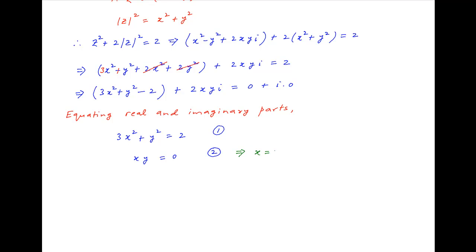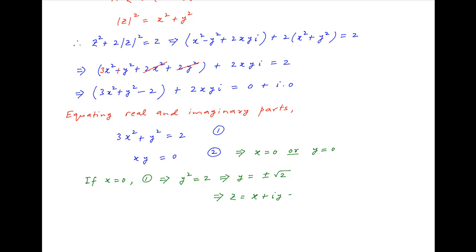Equation 2 implies that x equals 0 or y equals 0. In the first case, if x equals 0, then equation 1 implies y squared equals 2 minus 3x squared equals 2, which gives y equals plus or minus root 2. Therefore z equals plus or minus i root 2.